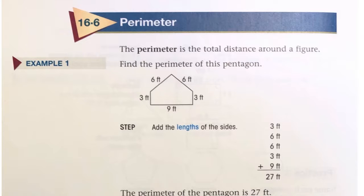Basic Math, Chapter 16, Section 6: Perimeter. The perimeter is the total distance around a figure.